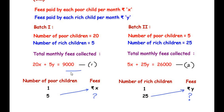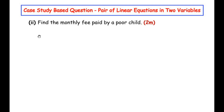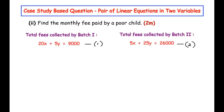That is the answer to the first sub-question. Moving on to the next one — find the monthly fee paid by a poor child. Considering equation 1 and equation 2 from the previous part, we need to find the value of x, since x represents the monthly fee paid by a poor child. To find x, we will use the elimination method.